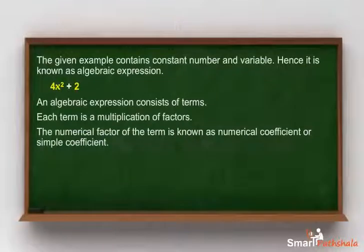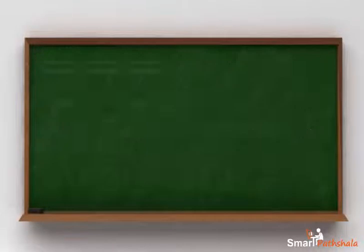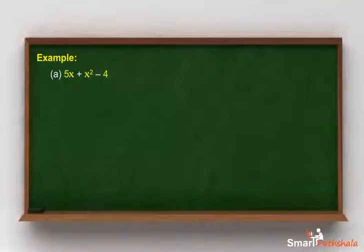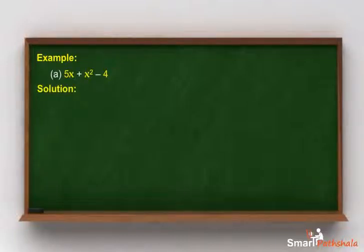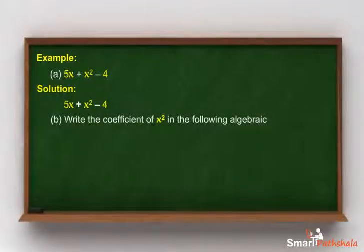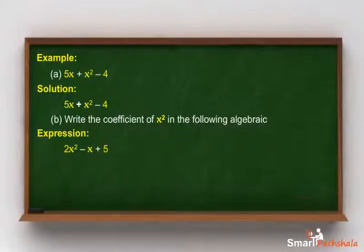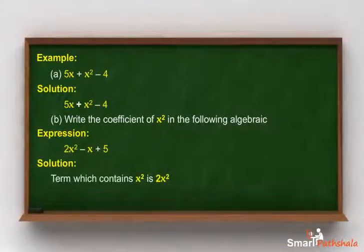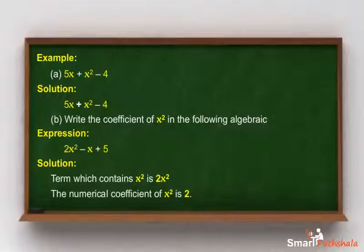Example A: given the expression 5x plus x squared minus 4, write all the terms of the algebraic expression. Solution: the terms are 5x, x squared, and minus 4. Part B: write the coefficient of x squared. The term which contains x squared is 2x squared, so the numerical coefficient of x squared is 2.